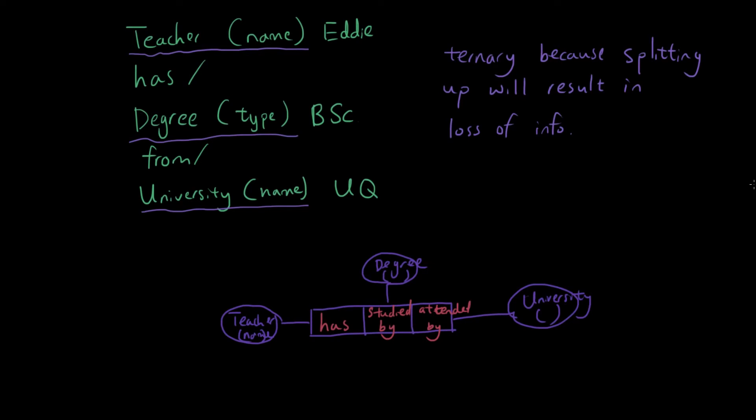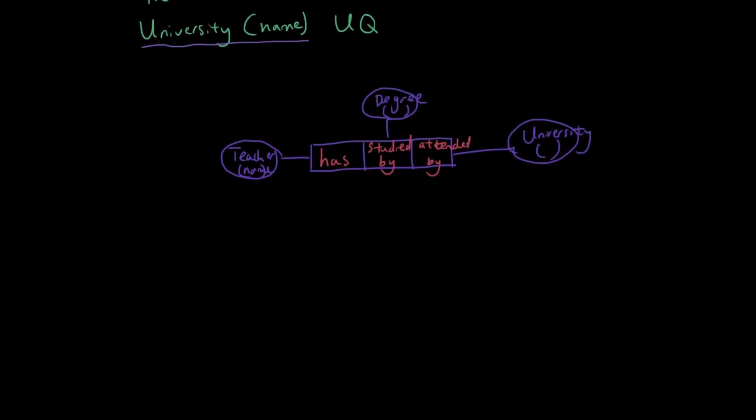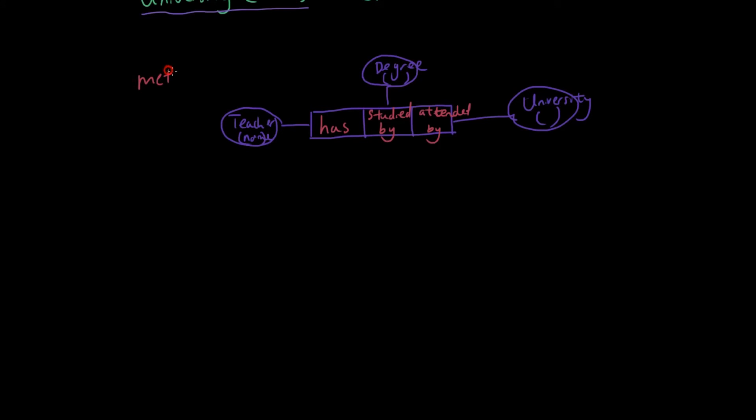So that's a ternary relationship. That's one way of representing that. So method one.